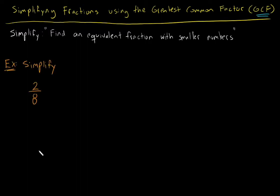So this is a type of question you might come across where it says just simplify 2 over 8. So that just means find me another fraction, find me an equivalent fraction, but with smaller numbers. And how do we do that using the GCF method? Well, first thing we want to do is find the greatest common factor of the numerator and the denominator. So let's find the GCF of 2 and 8.